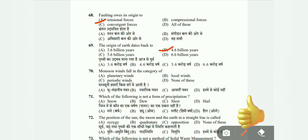Question 70: Monsoon winds fall in which category — planetary winds, local winds, periodic winds, or none of these? The correct answer is periodic winds.